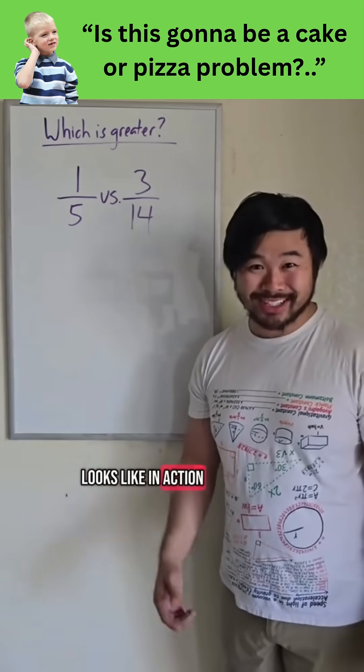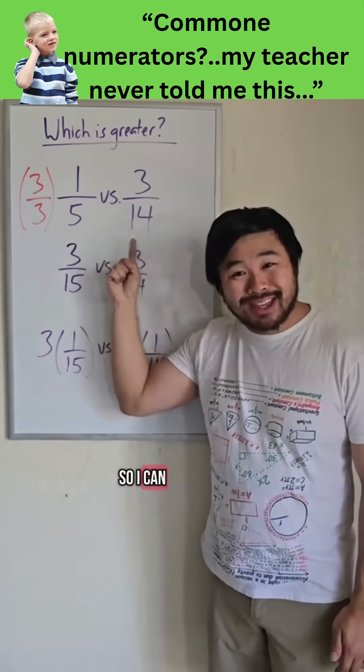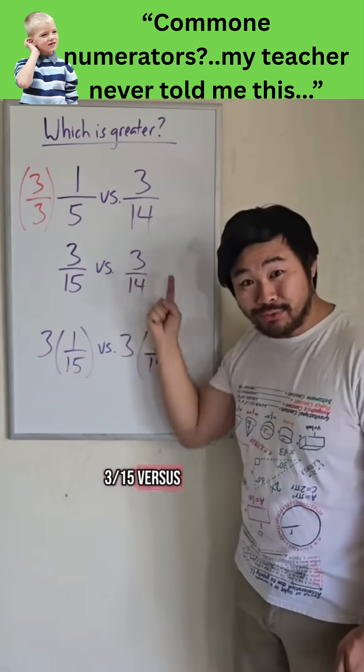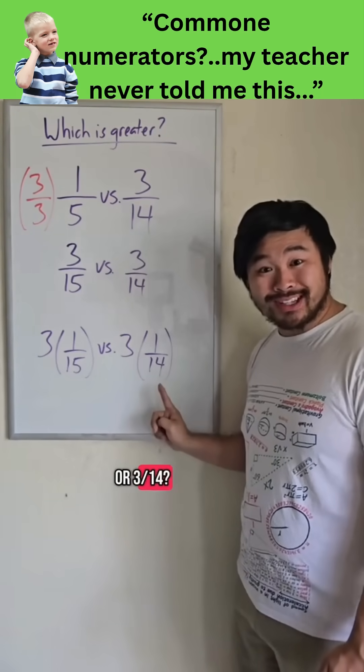Here's what this looks like in action. A common numerator over here is 3, so I can rewrite this as 3/15 versus 3/14. So which is greater? 3/15 or 3/14?